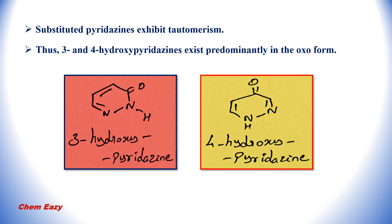Substituted pyridazines exhibit tautomerism. For example, 3- and 4-hydroxy pyridazines exhibit predominantly in the oxo form. So this one is 3-hydroxy pyridazine and this is 4-hydroxy pyridazine.